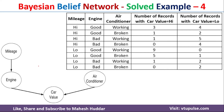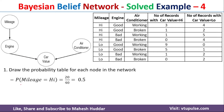First we will start with the conditional probability for mileage. The probability of mileage being high — we need to consider only the high examples. If we add all those records, we get 20, and the total number of records is 40. So 20 divided by 40 equals 0.5. The probability of mileage being low is 1 minus 0.5, which is also 0.5.